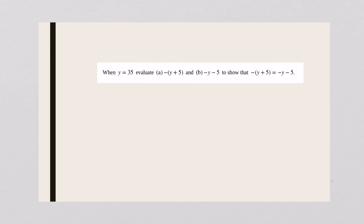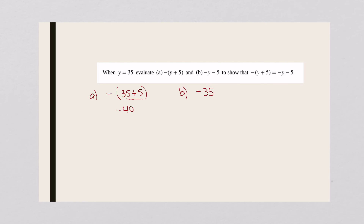On this one we're going to let y equals thirty-five. On part a, I've got thirty-five plus five — I add these together and get forty, then multiply times the negative, I get negative forty. On part b, I've got negative thirty-five minus five, and I get negative forty still. So either way you still get the same answer, whether the negative sign has been distributed or not.